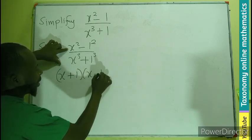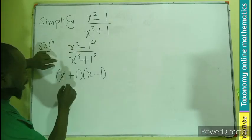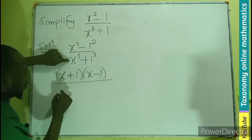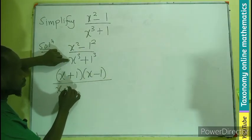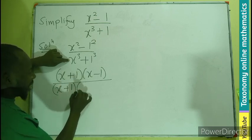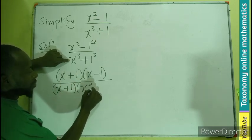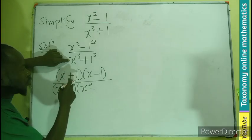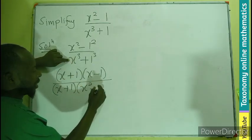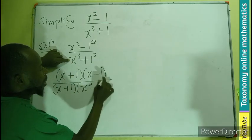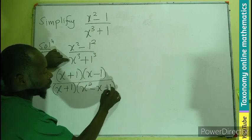Then for the denominator, we have x plus 1, x squared minus the product of the 2, meaning x times 1. That would be x plus 1 squared, which would remain 1.